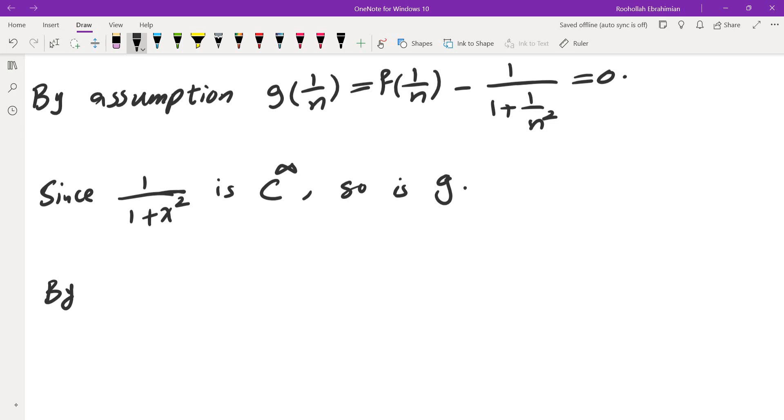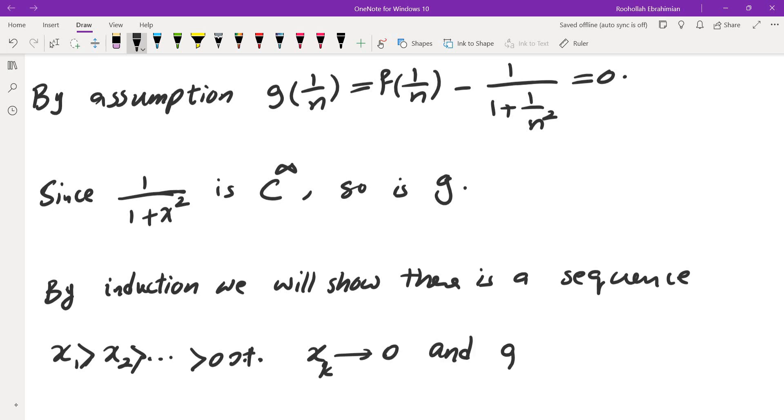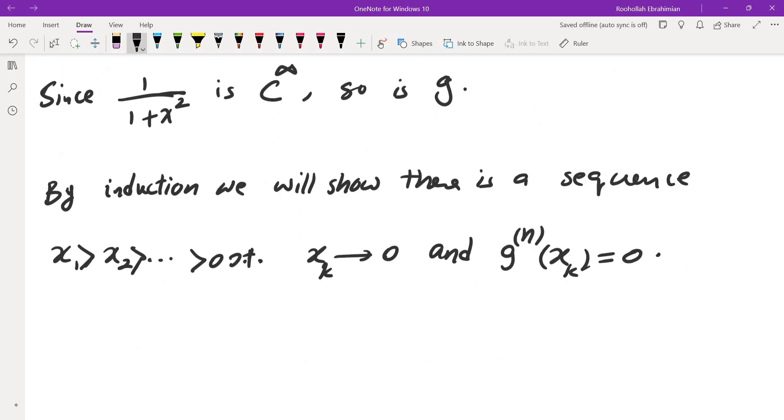So by induction we will show there is a sequence x1, x2, etc. such that, and this sequence is decreasing, all of them greater than 0, such that xk approaches 0 and gn of xk is equal to 0. And this is for all n.